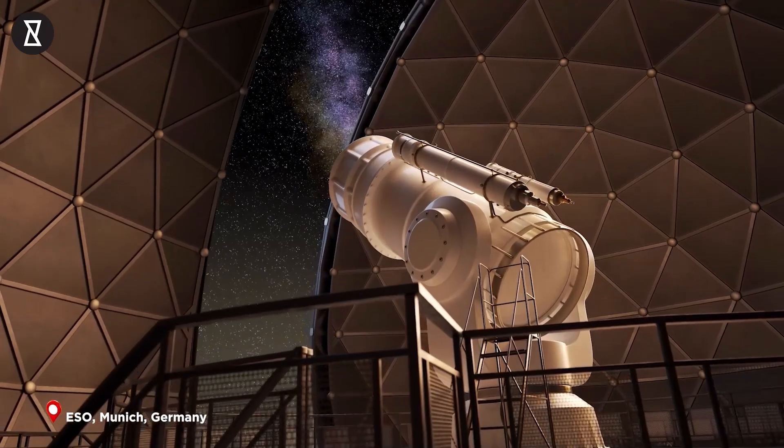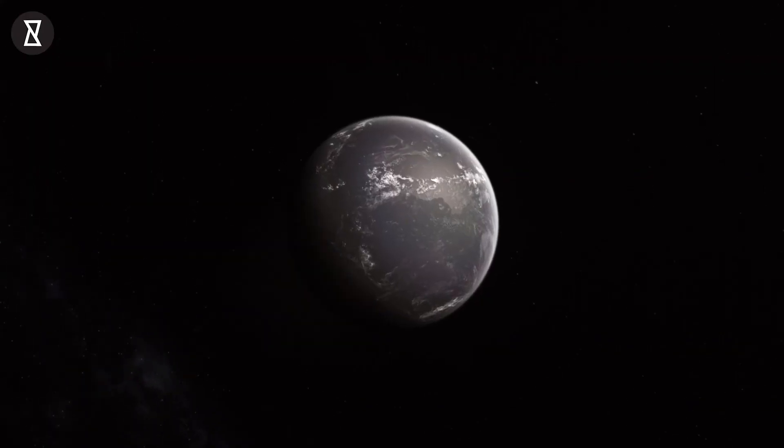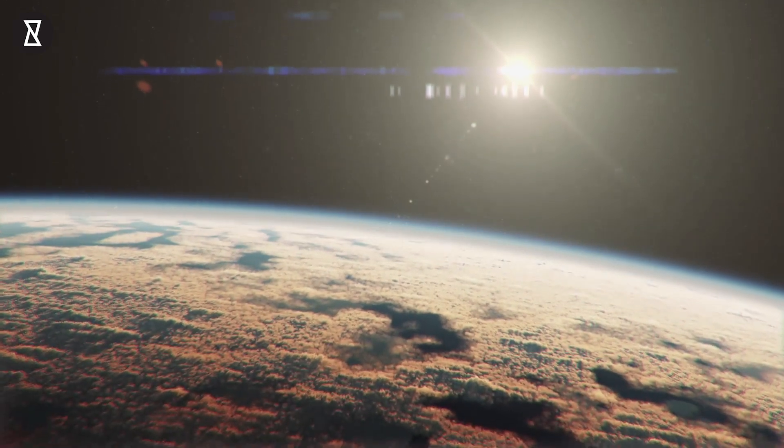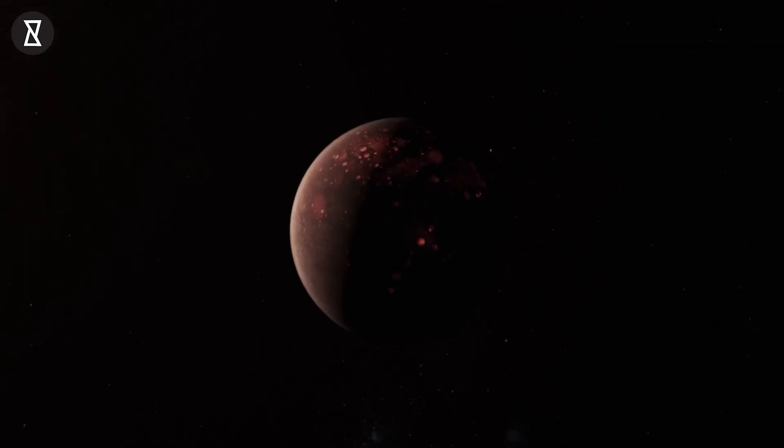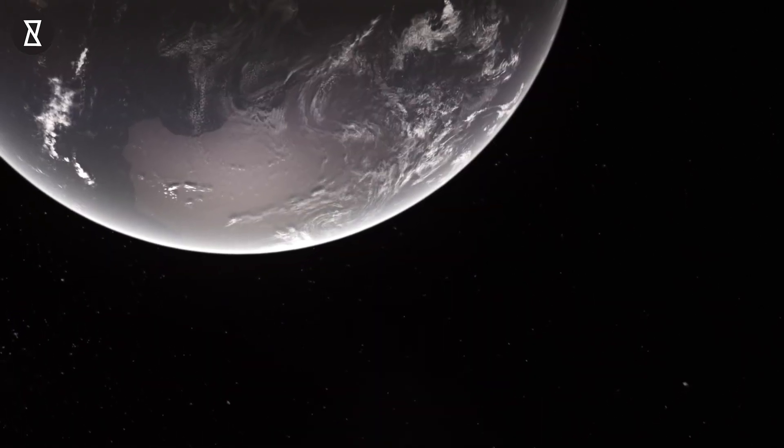Discovered in 2016 by the European Space Observatory, Proxima b, one of the three planets of Proxima Centauri star system, orbits its star every 11.2 Earth days. In fact, Proxima b lies in the habitable zone of the star system, which means it could contain liquid water.